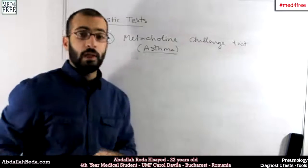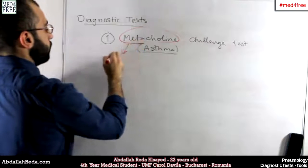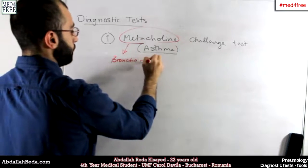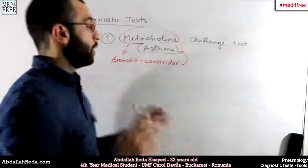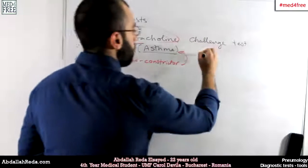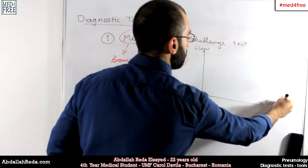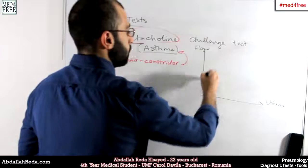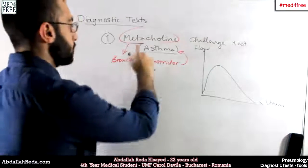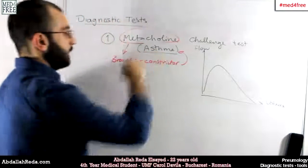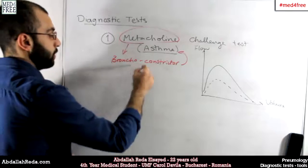Patients with asthma that have a normal spirometry can use that test, because methacholine is a bronchoconstrictor in patients with asthma. Normal subjects who take this test are not supposed to have any kind of bronchoconstriction. The result before taking methacholine shows a normal flow-volume curve, and the result after taking it should be reduced because of the provoked bronchoconstriction.